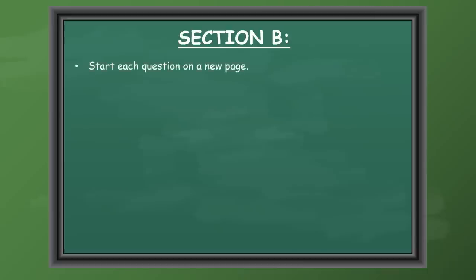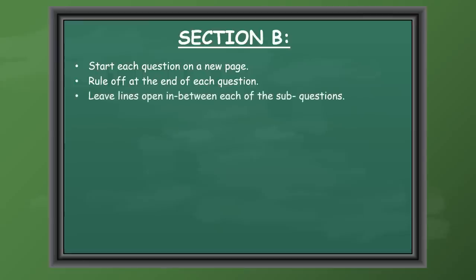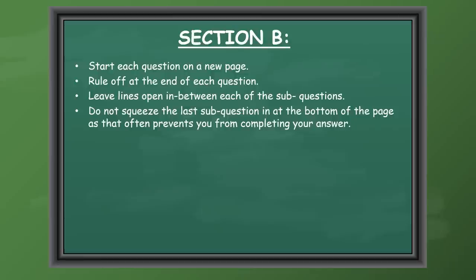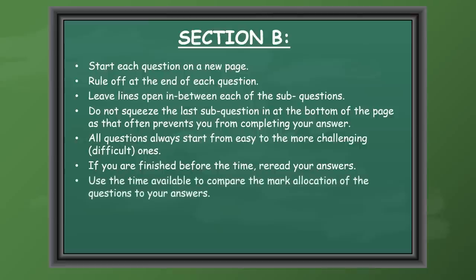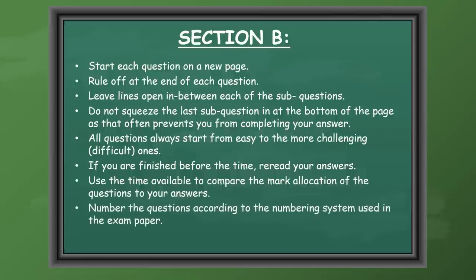Now we're going to look at some general tips for the longer questions in Section B. Start each question on a new page. Rule off at the end of each question to help the marker calculate your marks. Leave lines open in between each of the sub-questions, and do not squeeze the last sub-question at the bottom of the page. All questions start from easy to more challenging. If you finish before the time, re-read your answers and compare the mark allocation to ensure you've written enough. Number the questions according to the numbering system used in the exam paper.